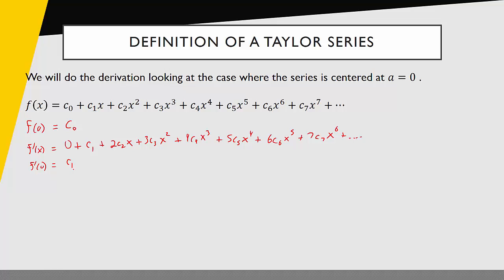But not only should the position and the slope be the same at x equals zero if the series is a good representation of our function, but also the concavity should match. In other words, the second derivative should also be the same. So let's just keep repeating this process. The second derivative of x should look like 2c2 plus 3 times 2c3 times x, 4 times 3c4 times x squared, and we can continue going here.